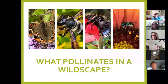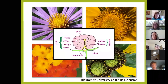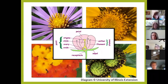Now that we've talked about what a wildscape is, let's talk about what pollinates in a wildscape. Pollinators are not uniquely insects, but in large part they are. A pollinator is any animal — insect or not — that takes the pollen from the male component of a flower and deposits it into the female component so that seed or berries can be produced, to propagate the species.